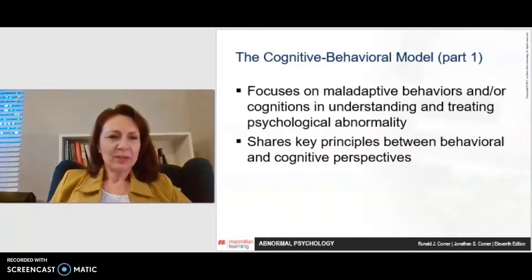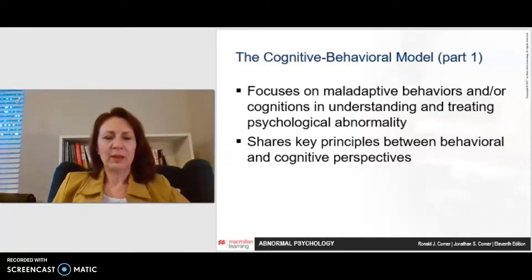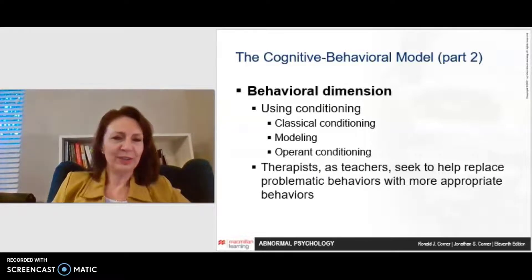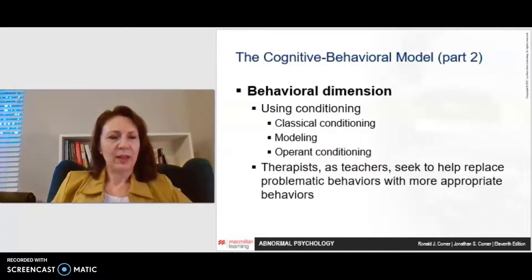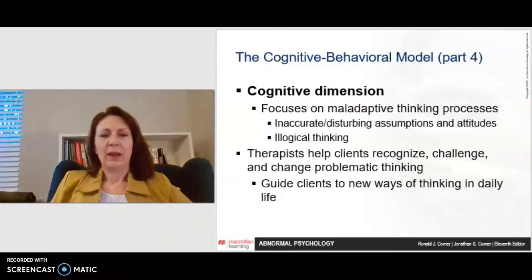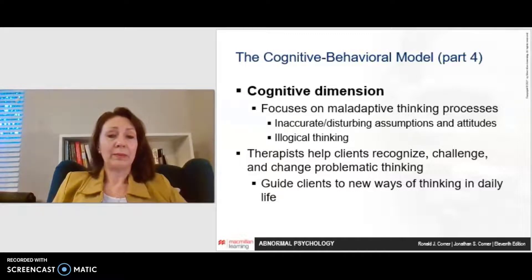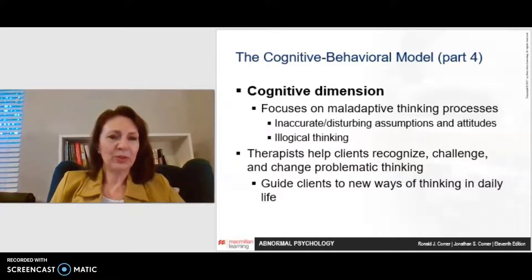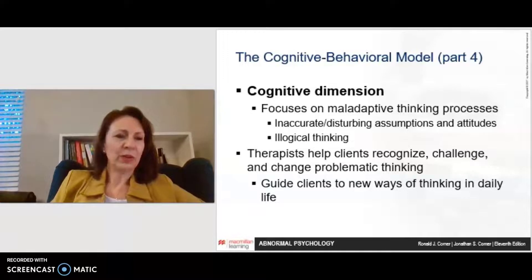The cognitive behavioral model focuses on maladaptive behaviors and cognitions in understanding psychological abnormality. It shares key principles between behavioral and cognitive perspectives. In the behavioral dimension, we look at conditioning — classical conditioning, modeling, and operant conditioning — where the therapist acts like a teacher and tries to replace problematic behaviors with more adaptive ones. In the cognitive dimension, the focus is on changing inaccurate or disturbing assumptions and illogical thoughts. If those ways of thinking can be changed, you're going to feel better because you're not having negative thoughts that produce negative feelings, improving mental health.